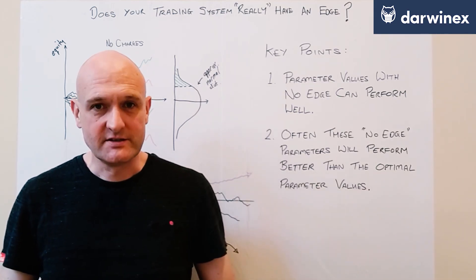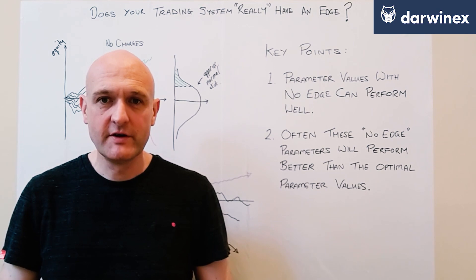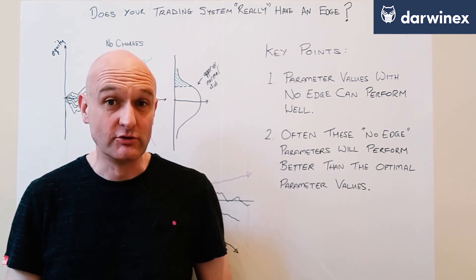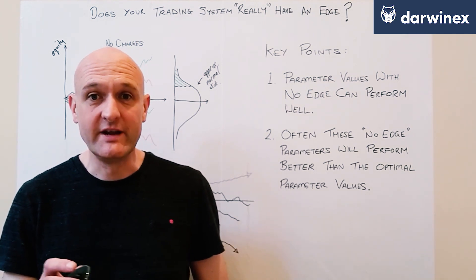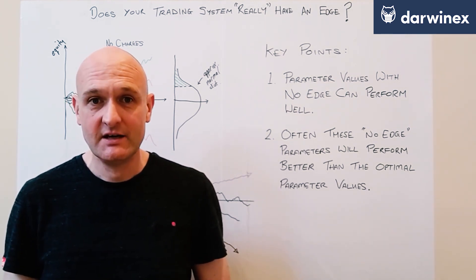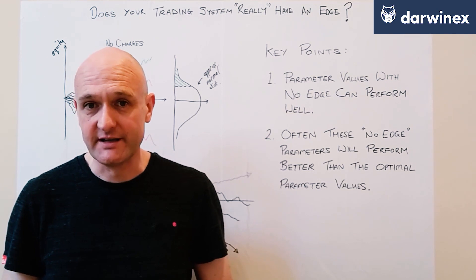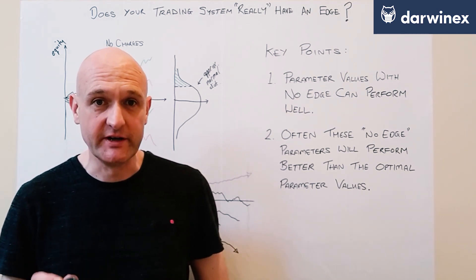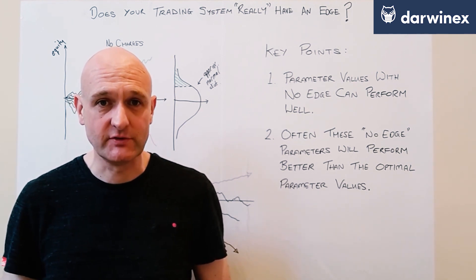So in the analysis we just looked at, all of those completely random systems represent the parameter combinations in your optimization that don't really provide any ability to exploit an edge by your trading system. They're the parameter values that you need to avoid if your system is ever going to be successful.